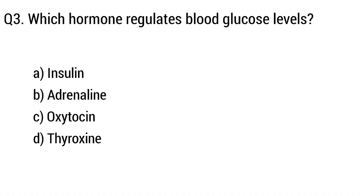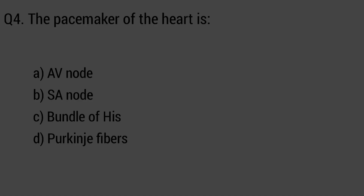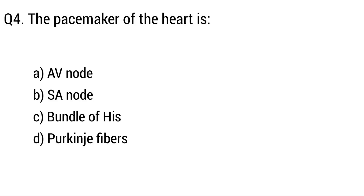Question 3. Which hormone regulates blood glucose level? Option A: Insulin. B: Adrenaline. C: Oxytocin. D: Thyroxin. The right answer is Option A: Insulin.